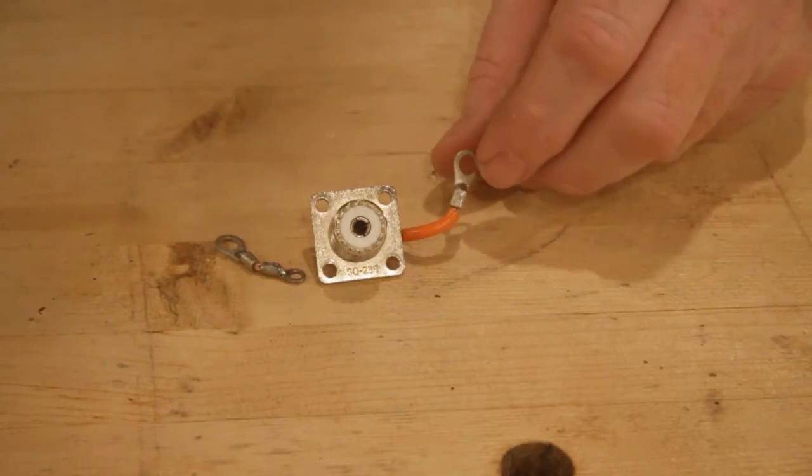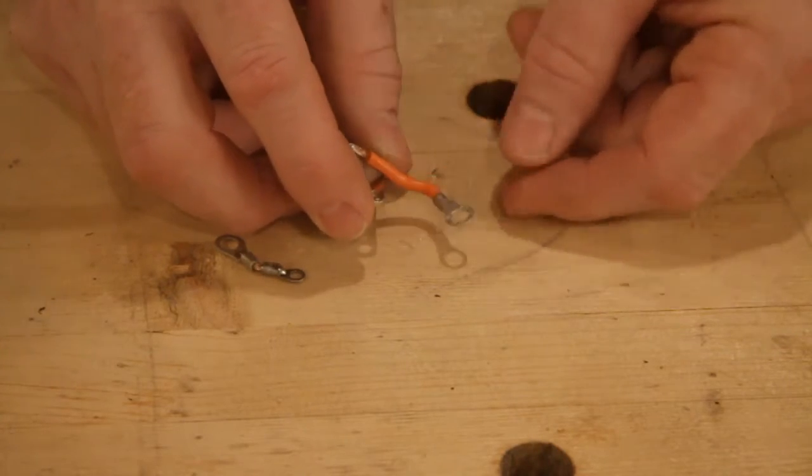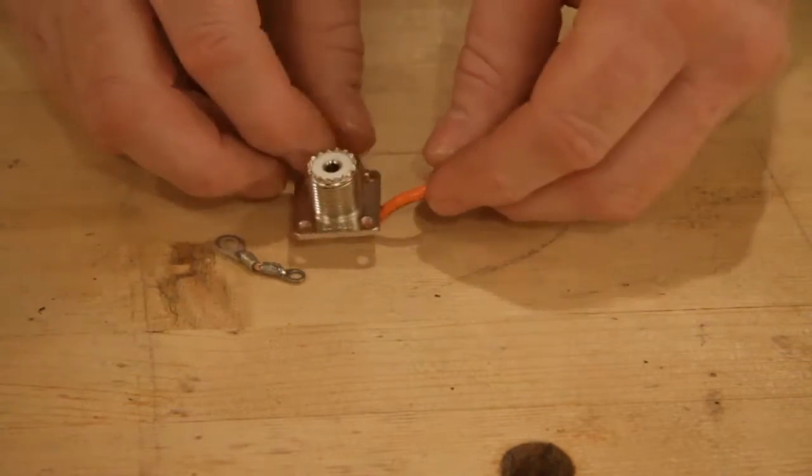We've got an SO239 soldered with about an inch and a half of wire on the back going to a terminal lug for a number 10 and it comes out and I'll show you how that fits in a minute.